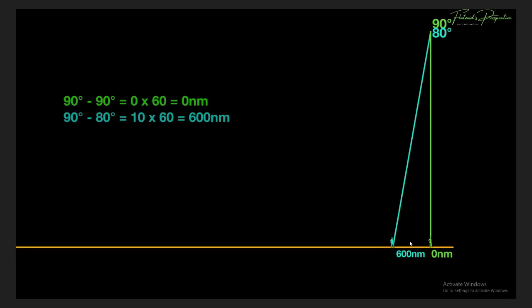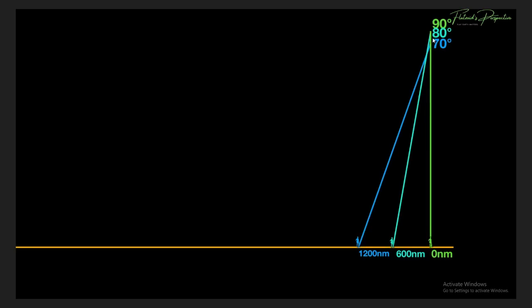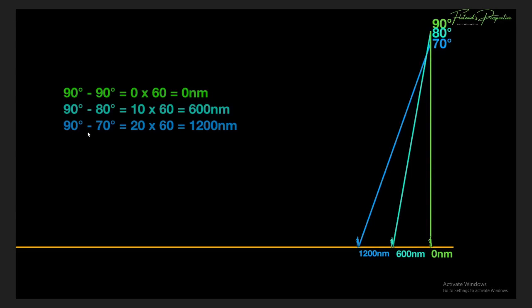Now we do the same for 70 degrees — you see it having an apparent altitude drop. Why? Simple: every degree is an apparent altitude angle measurement. Your distance changes, your angle to the observation changes, your line of sight changes. It's not physically dropping; it's all about angles and perspective. We work out 90 minus 70 equals 20, times 60 — because it's a minute of angle — equals 1,200 nautical miles. Pay attention because there is a pattern here.